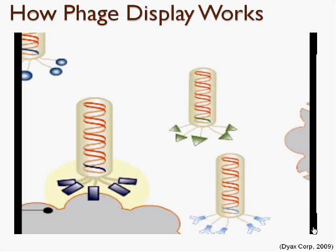One thing to note about this animation is that it shows protein to cell membrane binding. Since DNA does not contain receptor sites, the protein will instead attach to the nuclear bases that DNA is composed of. However, the mechanism of the technique will stay the same.